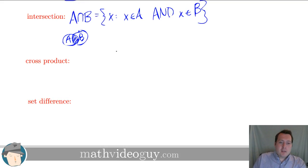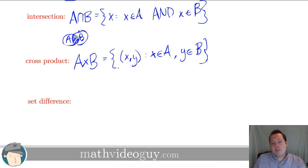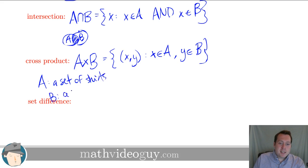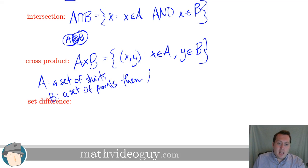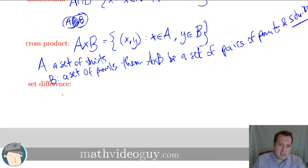Next we have the cross product, written A × B. This is a set of ordered pairs (x, y) such that x ∈ A and y ∈ B. Using the earlier example, if A is a set of shirts and B is a set of pants, then A × B is the set of all possible pairings of a shirt with a pair of pants — every combination.